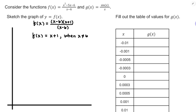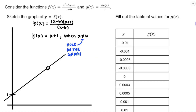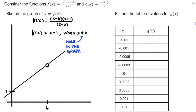If we plugged in x equals 6 to the original definition of f, we'd divide by 0, so the function is undefined there — this is a hole in the graph. We know how to graph y equals x plus 1: it's a line with positive slope and an x-intercept of 1, with a hole drawn at x equals 6. The y-coordinate of that hole is what we're interested in, and that's equivalent to asking: what's the limit of the function as x approaches 6? Since y equals x plus 1 everywhere on the line, the hole has y-coordinate 7.